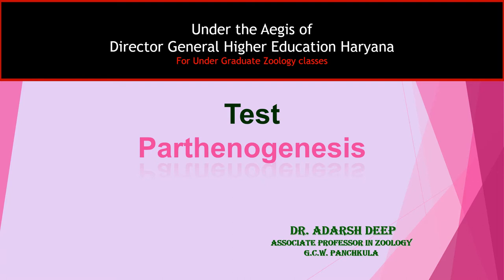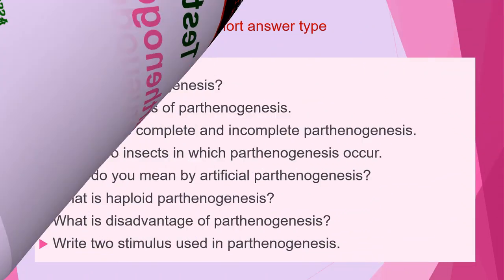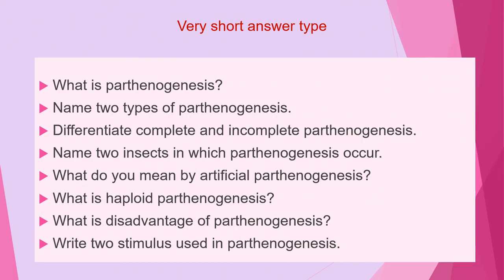These questions may be framed into three categories. The first category of questions are very short answer type questions, which will cover the first compulsory question of your paper and you have to answer these questions in two or three lines.